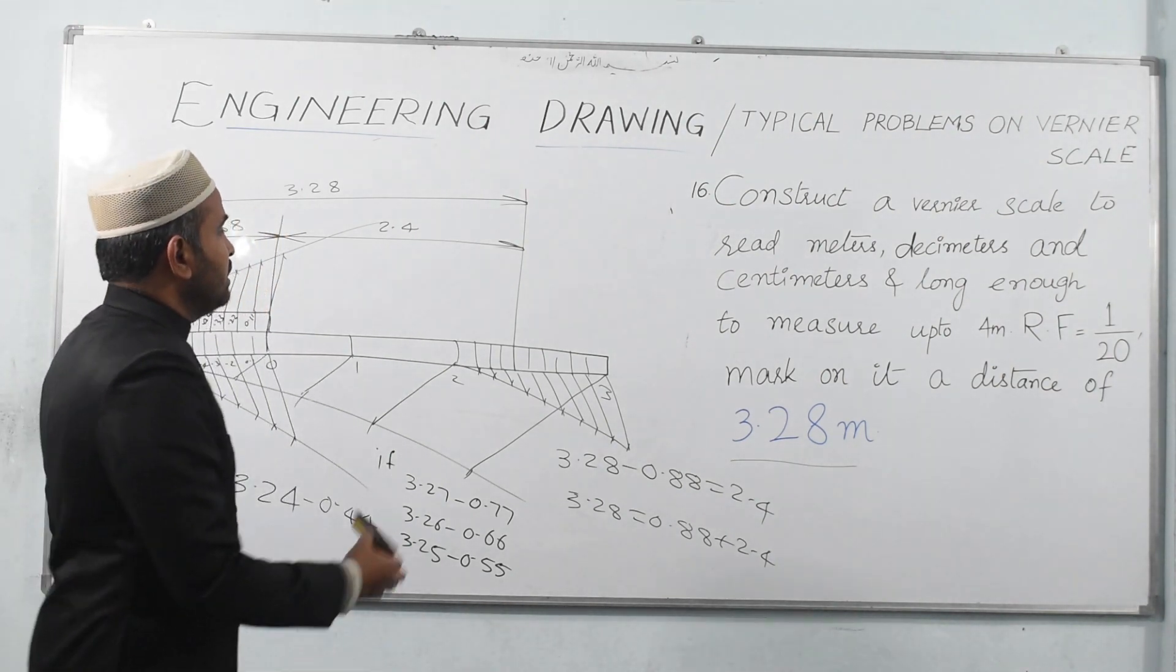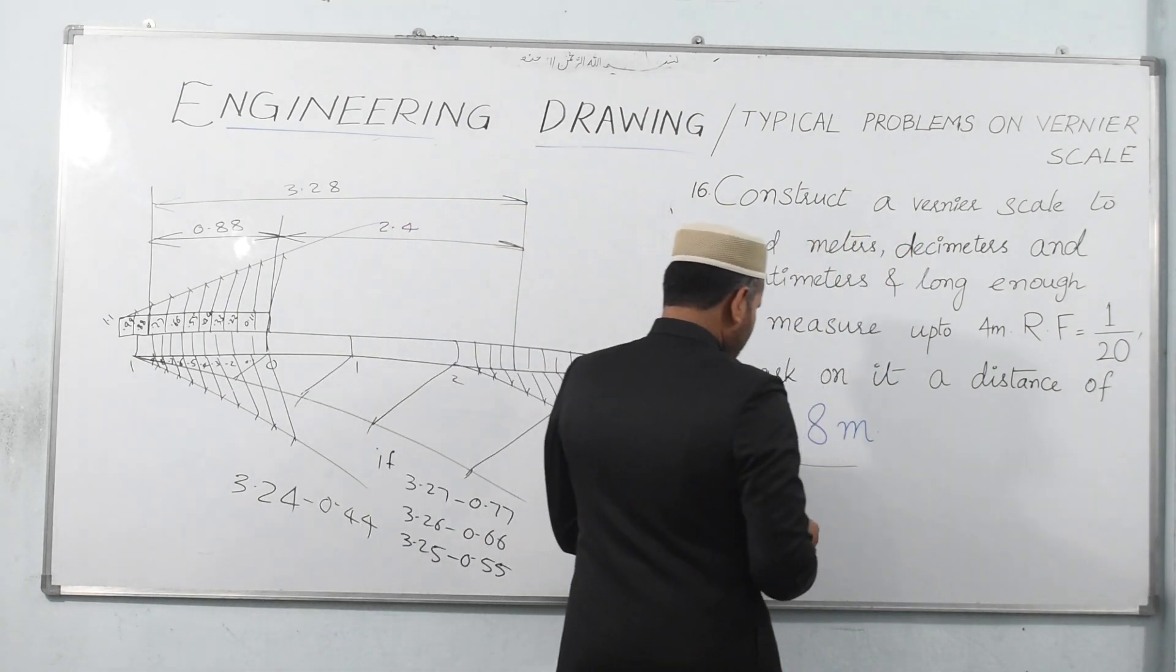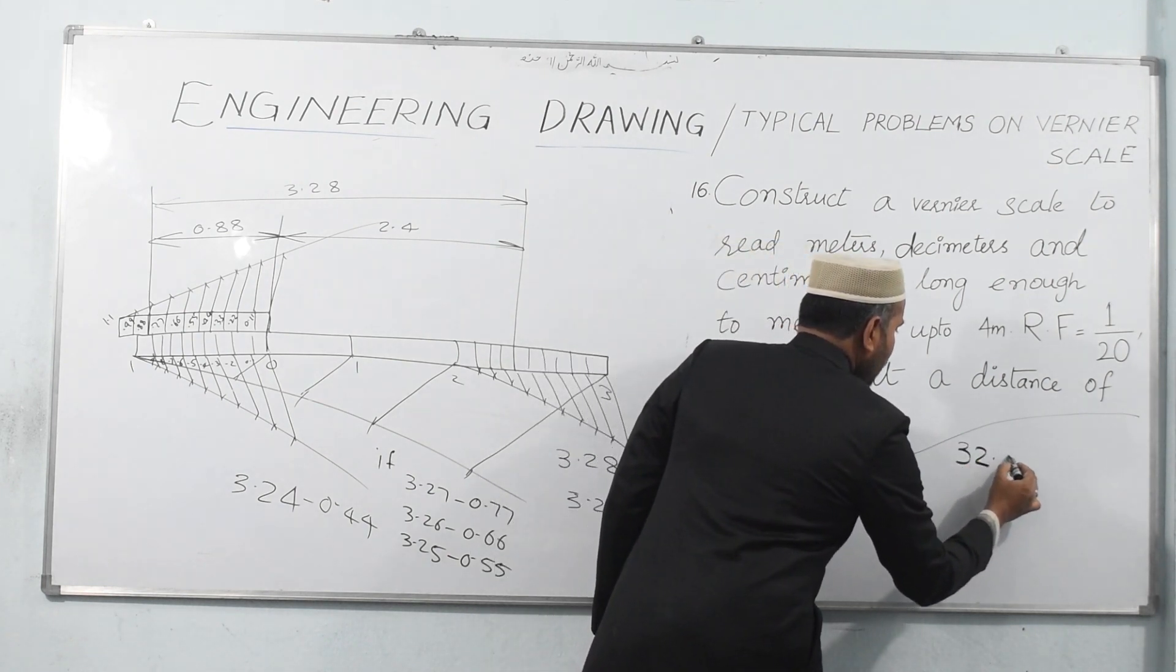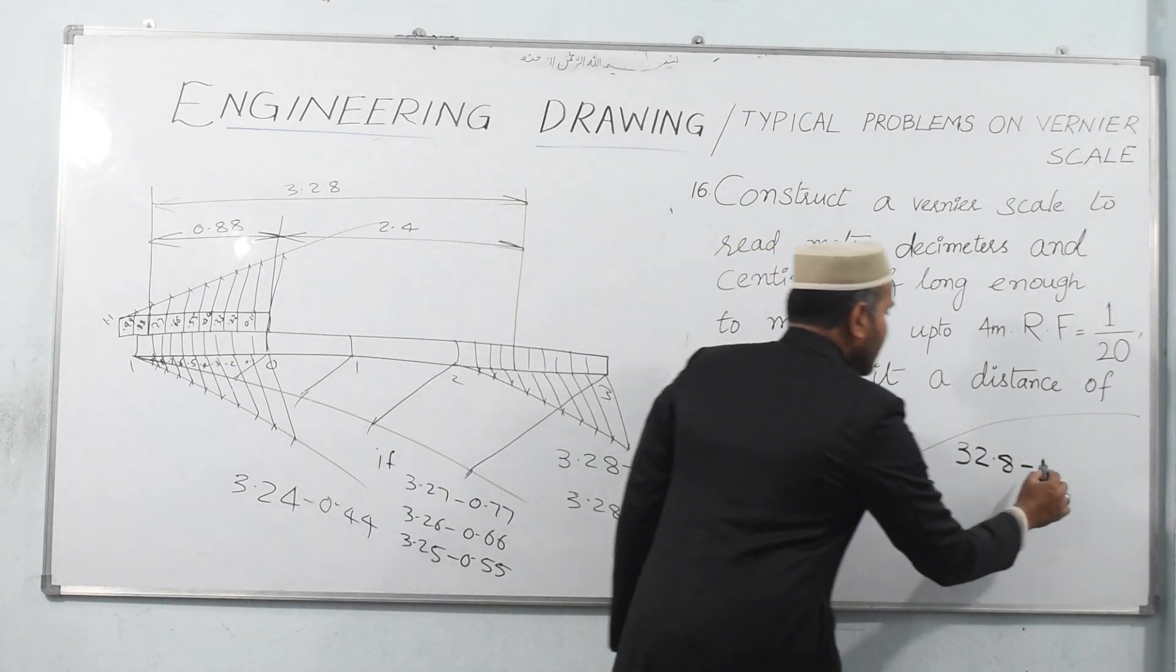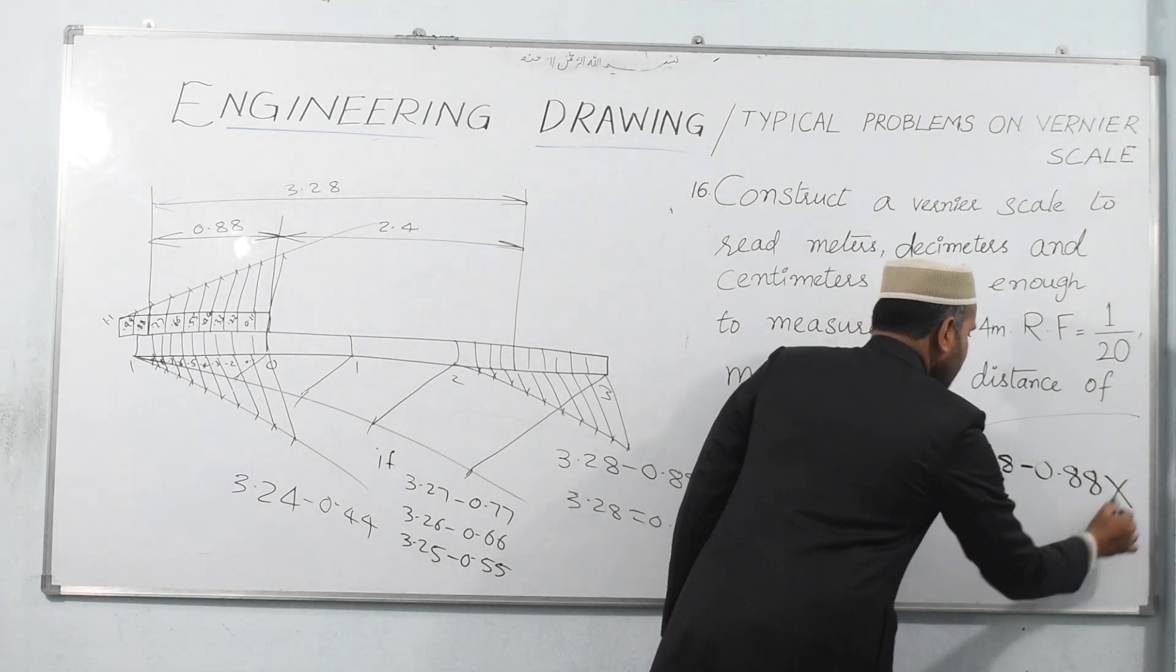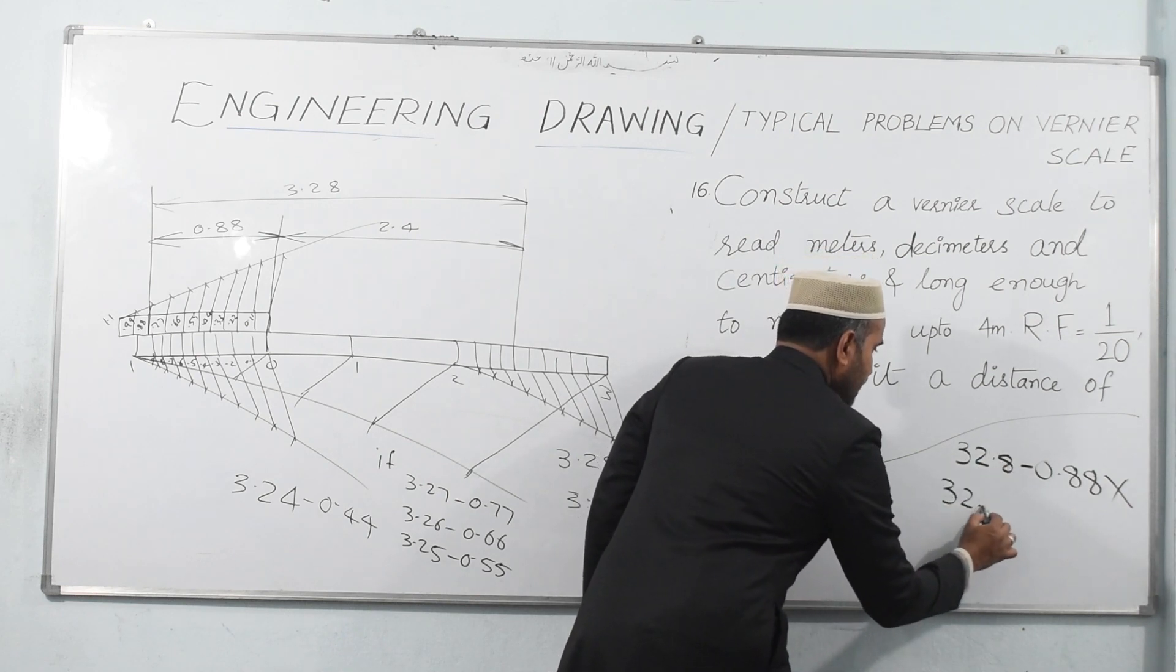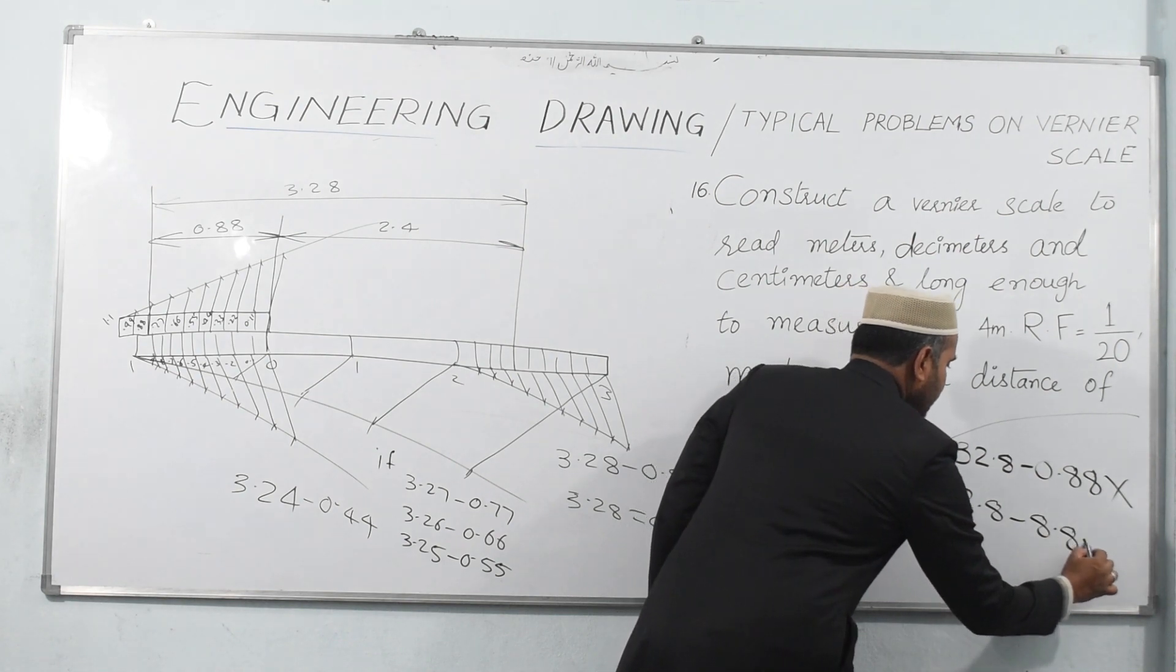Now there is one more question. Generally people ask me, sir suppose he asks us 32.8, then what is that I should subtract? People answer me, sir again we can subtract 0.88, which is absolutely wrong. Because after the decimal there is only one value. If it is 32.8, you should subtract 8.8.